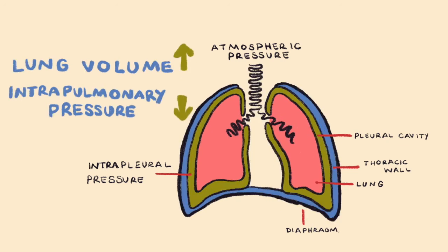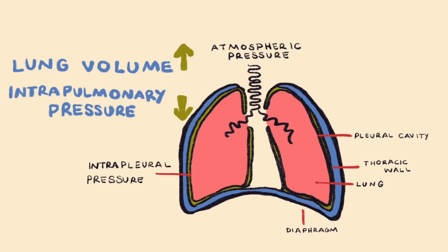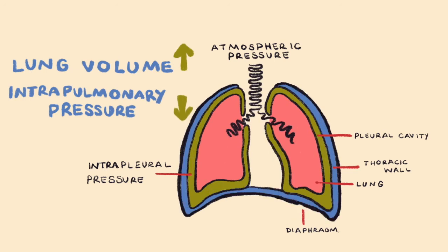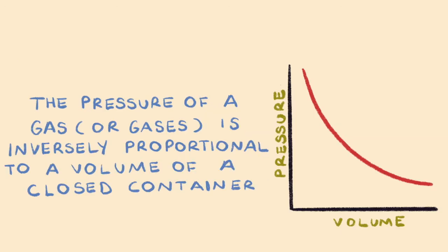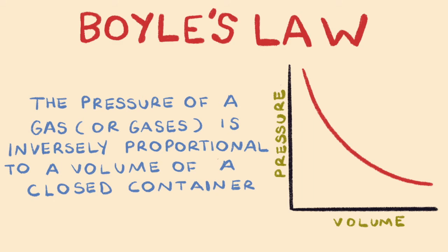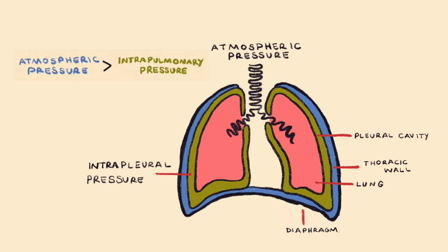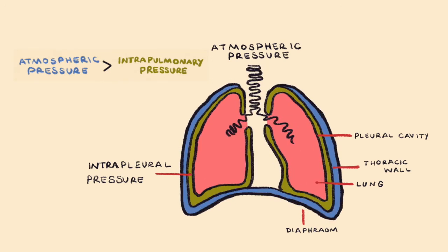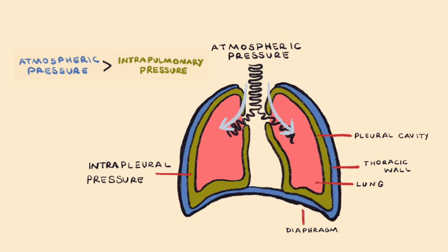When lung volume increases, the intrapulmonary pressure decreases. This is an extremely important point, and this is because the pressure of a gas is inversely proportional to the volume of a closed container — the lungs. This is defined as Boyle's Law. When intrapulmonary pressure decreases below atmospheric pressure, air flows into the lungs. This is also defined as being a negative pressure within the lungs.